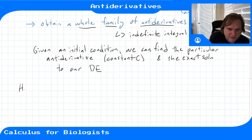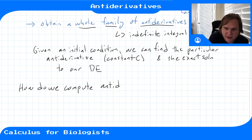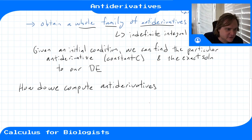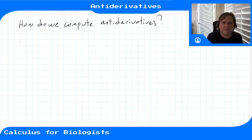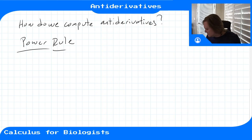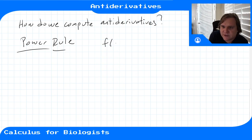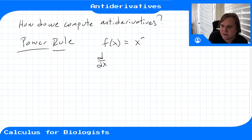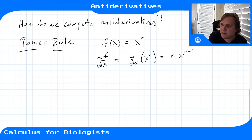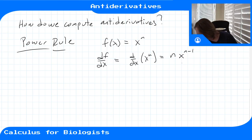We build up anti-derivative rules using our derivative rules — basically doing everything backwards. Starting with the power rule for derivatives: if f(x) = x^n, then d/dx of x^n equals n·x^(n-1).